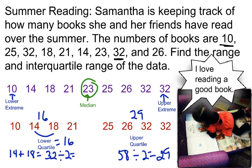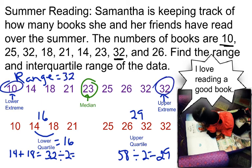Now I have all my data identified. To find the range, I subtract the extremes: 32 and 10. So, 32 minus 10 is 22. My range is 22.